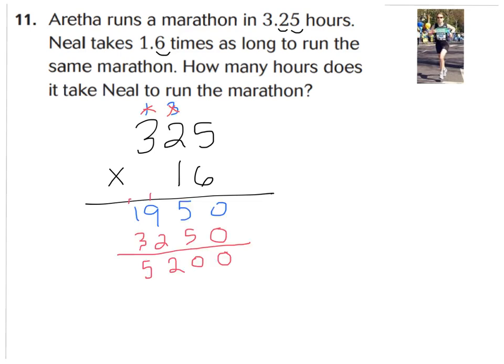When you multiplied, you should end up with 5,200, but remember you have 3 spaces to the right of your decimal point, so it should go to the thousandths place. So you would say that it takes Neal 5 whole hours and 2 tenths or 2 hundred thousandths of an hour to run the same marathon.